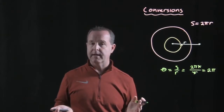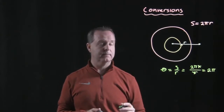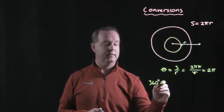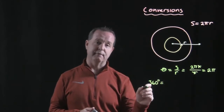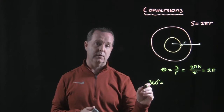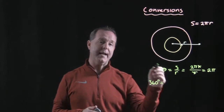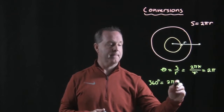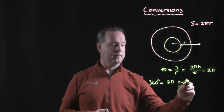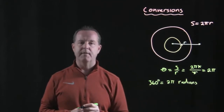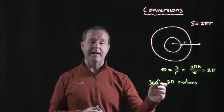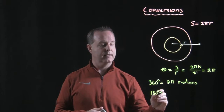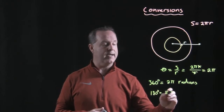Now remember degrees — how many degrees make a full circle? That was 360 degrees. So a full circle in degree world is 360 degrees, and a full circle in radian world is two pi radians. From there we can reduce a little bit by dividing both sides by two. So I get 180 degrees equals pi radians.